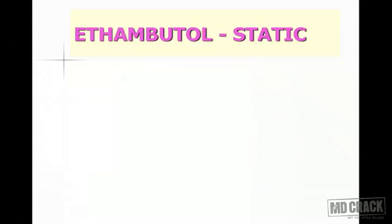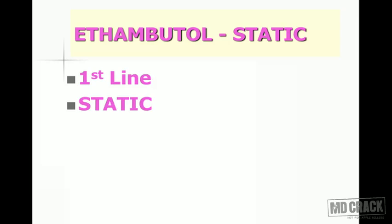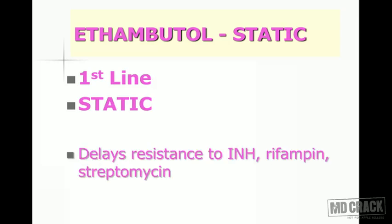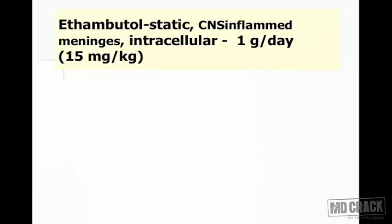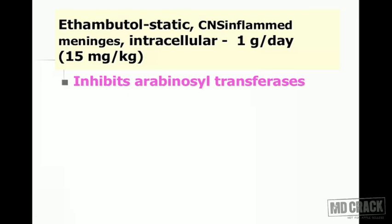Ethambutol is the first-line bacteriostatic agent, used to delay the development of resistance to INH, rifampin, and streptomycin. It penetrates the CNS and can be used for tuberculous meningitis. It has good intracellular penetration. The dose is 1 gram, or 15 mg/kg body weight.